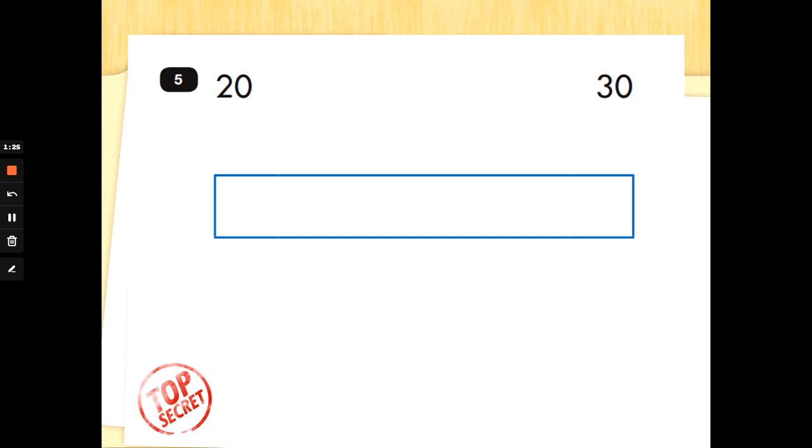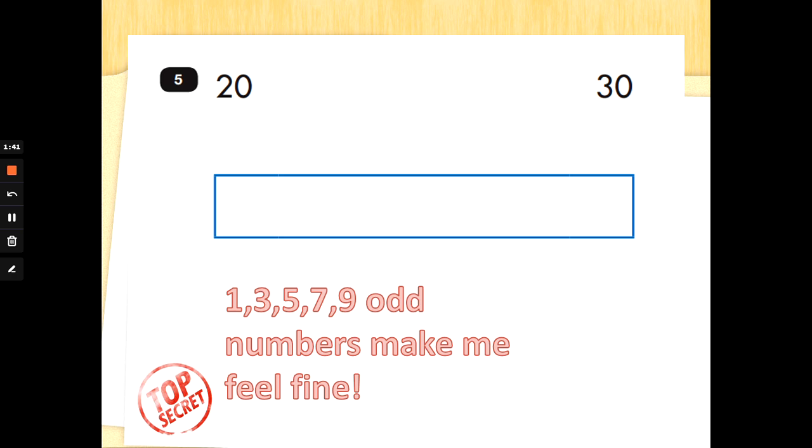Number five has got the number 20 and the number 30 and it wants you to write all the odd numbers between 20 and 30. Can you remember what an odd number is? One, three, five, seven, nine, odd numbers make me feel fine. Whether a number is odd or even, you look at the units. Any number that ends in a one, a three, a five, a seven or a nine is odd.